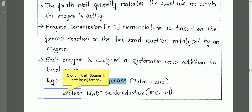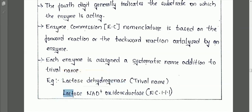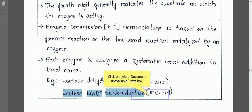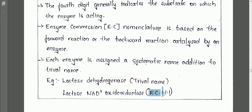For example, lactate dehydrogenase is the trivial name of an enzyme, and its enzyme commission name is 'lactate:NAD+ oxidoreductase.' Its enzyme commission number is EC 1.1.1.27.